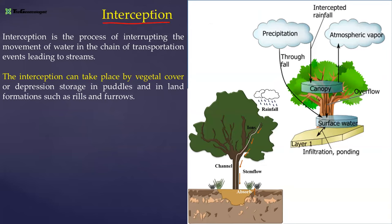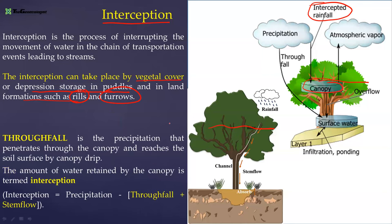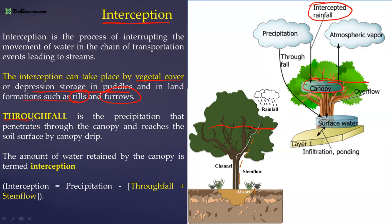Interception is when rainfall is intercepted by trees and canopies before reaching the ground. It can occur through vegetal cover, depression storage in puddles, and land formations such as rills and furrows. A related term is throughfall — precipitation that penetrates through the canopy and reaches the soil surface by canopy drip. The water retained by the canopy is interception; when it drips down it is throughfall. There is also stemflow — water running down the stem to the ground. So: interception = precipitation minus throughfall minus stemflow.